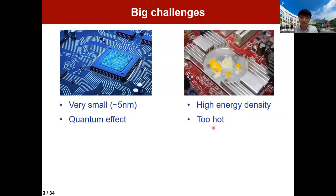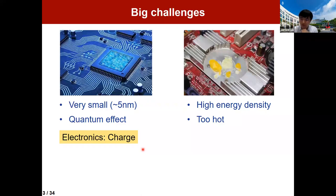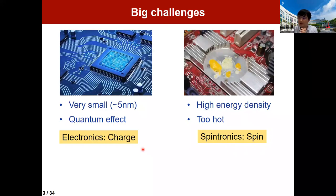The big challenge is a well-known story. Due to Moore's Law, the feature size of chips is very small now — almost several nanometers — so quantum effects are very important and cannot be ignored. Also, chips consume too much energy, and the energy density is really high, making them very hot. To solve this challenge, there are two approaches. One is more electronics, using the charge degree of freedom to save and process information. The other is spintronics: instead of charge, electrons also have the spin degree of freedom, which we can use to save and process information.